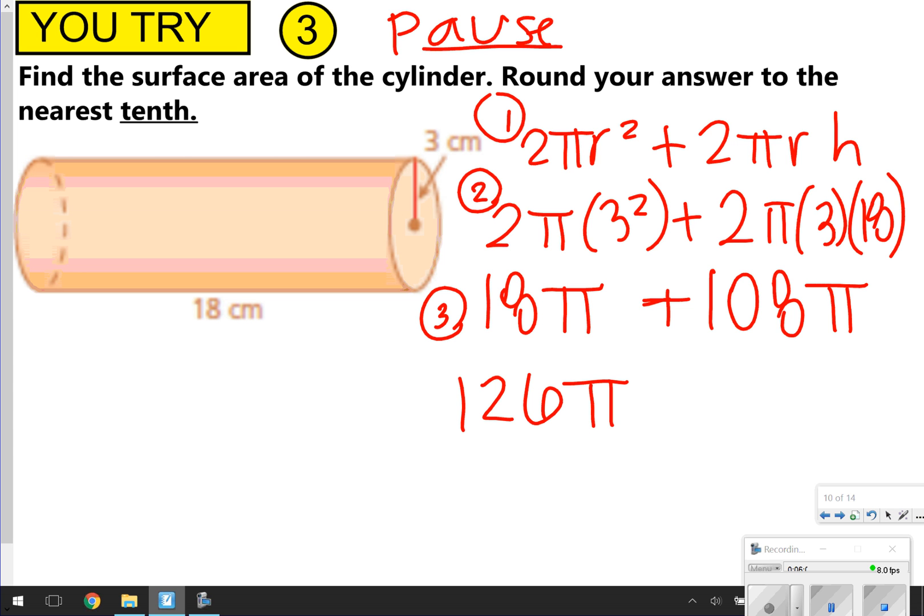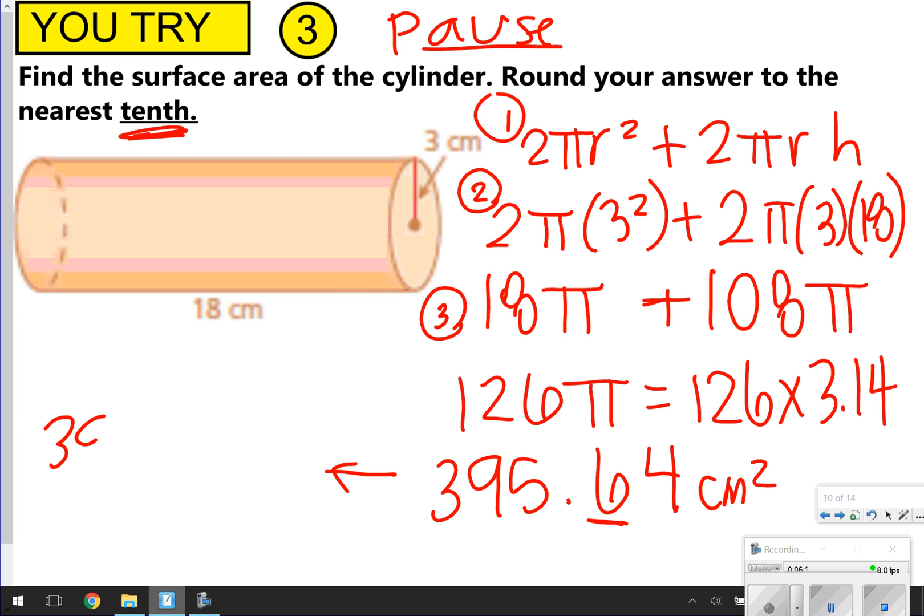But what I need to make sure that I do is round my answer to the nearest tenth. So that will be 126 times 3.14. That should give you 395.64 centimeters squared. Since it says round to the nearest tenth, this sixth is in the tenth spot. So really, your final answer rounded would be 395.6 centimeters squared.